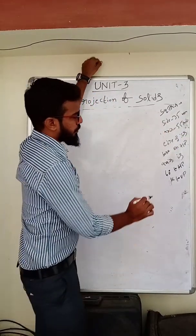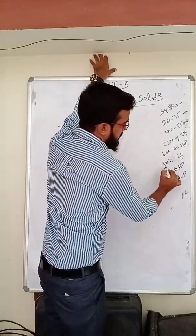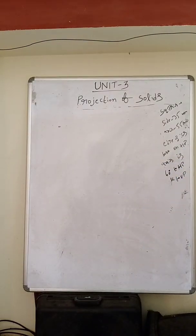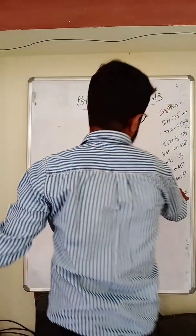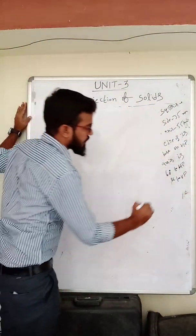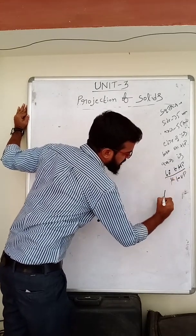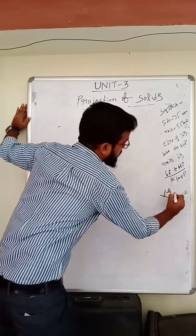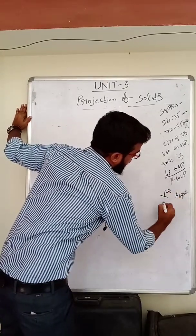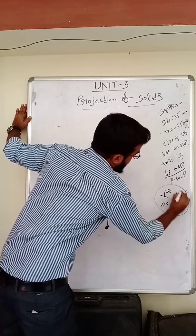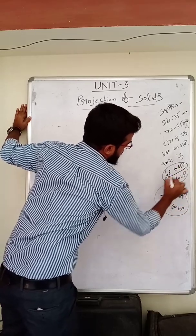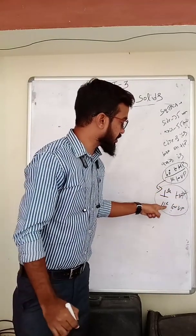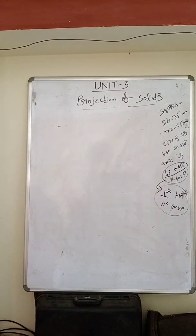So here, first point: the axis is inclined at 60 degrees to HP and parallel to VP. So, inclined at HP — in the initial condition, we are assuming the axis is perpendicular to HP and parallel to VP.